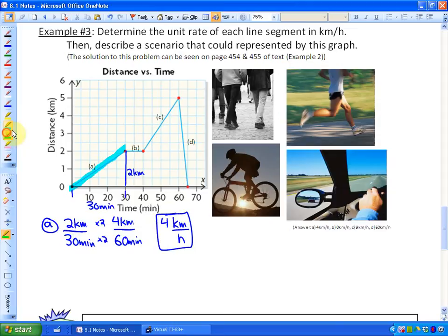Okay, line segment B is a straight horizontal line. And what that means is that in 10 minutes, so let me do this in green here, this distance here is 10 minutes.